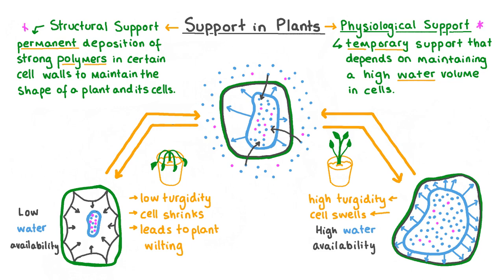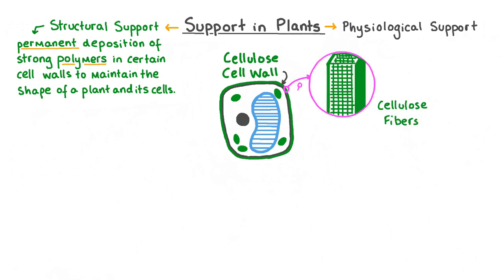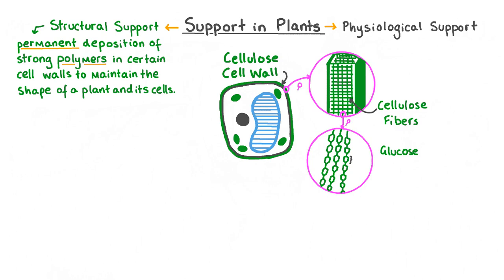Now let's learn about some structural support mechanisms. Structural support involves specific tough compounds being permanently incorporated into a plant cell wall. Different compounds will be deposited into the walls of different cells depending on their function. Plant cell walls are made primarily of a carbohydrate called cellulose. Cellulose fibres build up to form a mesh within plant cell walls, creating a physical barrier to support the cell. Each cellulose fibre is made up of many cellulose chains, which individually are made up of many monomers of glucose joined together, making cellulose very strong.